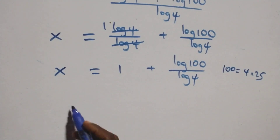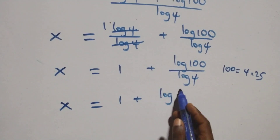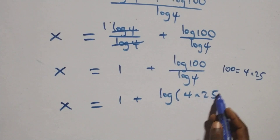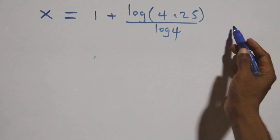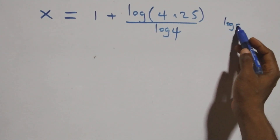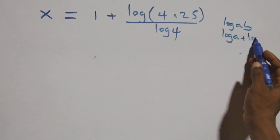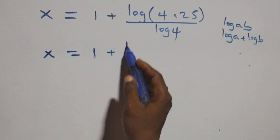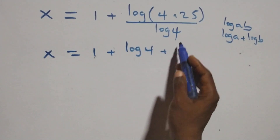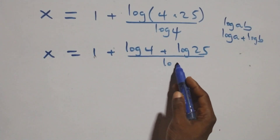This implies x equals 1 plus log(4 times 25) over log 4. This also follows the law of logarithm: log(a times b) is the same thing as log a plus log b. So here we have x equals 1 plus log 4 plus log 25, all over log 4.